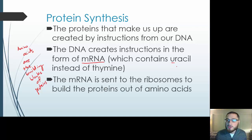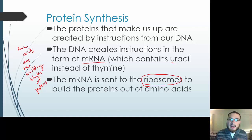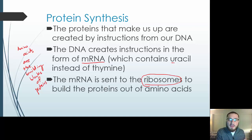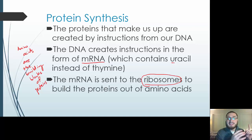In mRNA, there are no T's — only U's, because there's no thymine; there's uracil instead. The mRNA is sent to another organelle — it leaves the nucleus. I always tell students it's kind of like the DNA is the last copy of the most important book you own. You're not going to let your friend borrow that last Bible, but maybe you'll let them make copies of it. Same thing with DNA — you're not going to send your DNA out of the nucleus to the ribosomes. Instead, you make a copy, which is mRNA, and send that copy to the ribosomes so they can read the instructions.